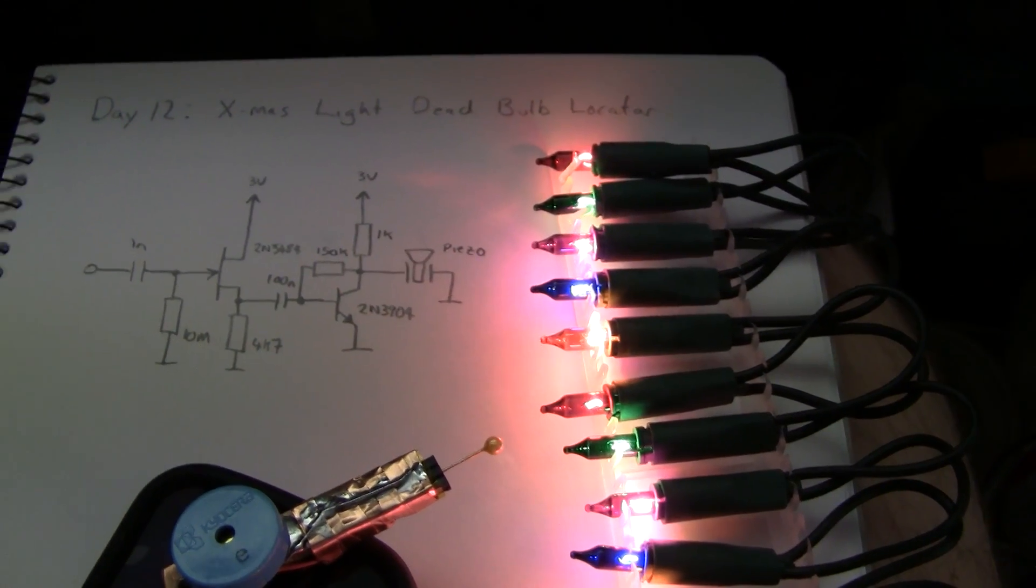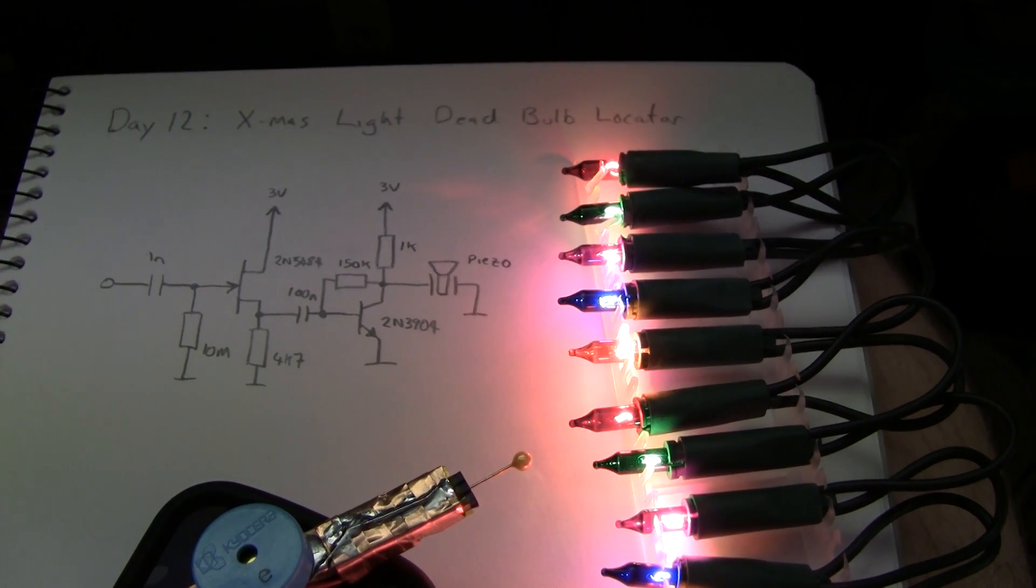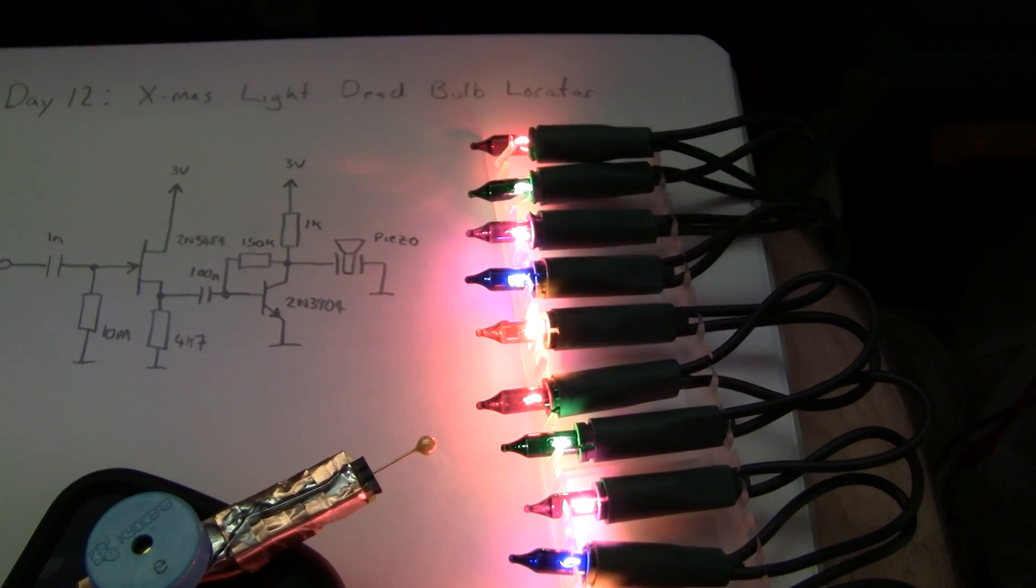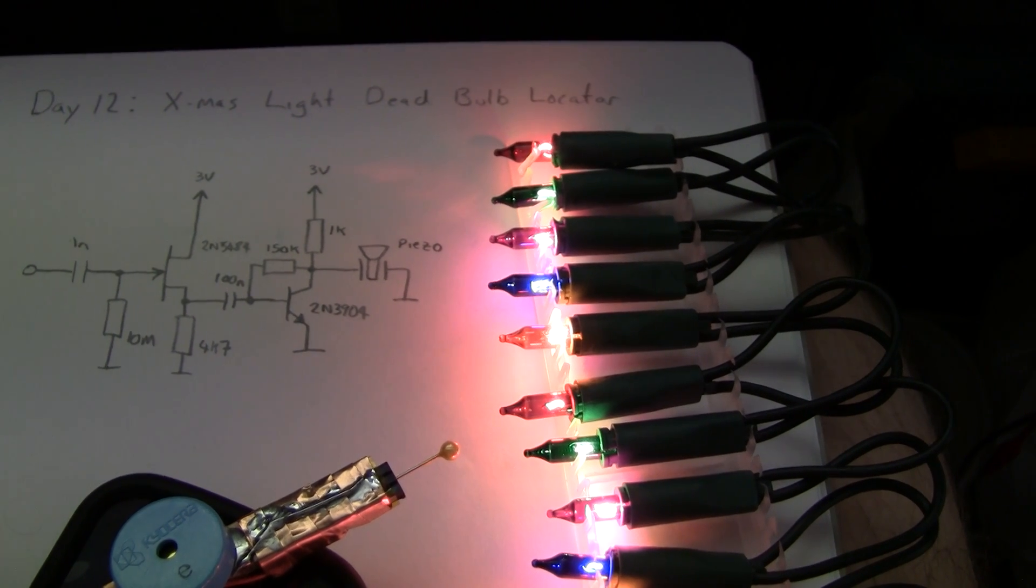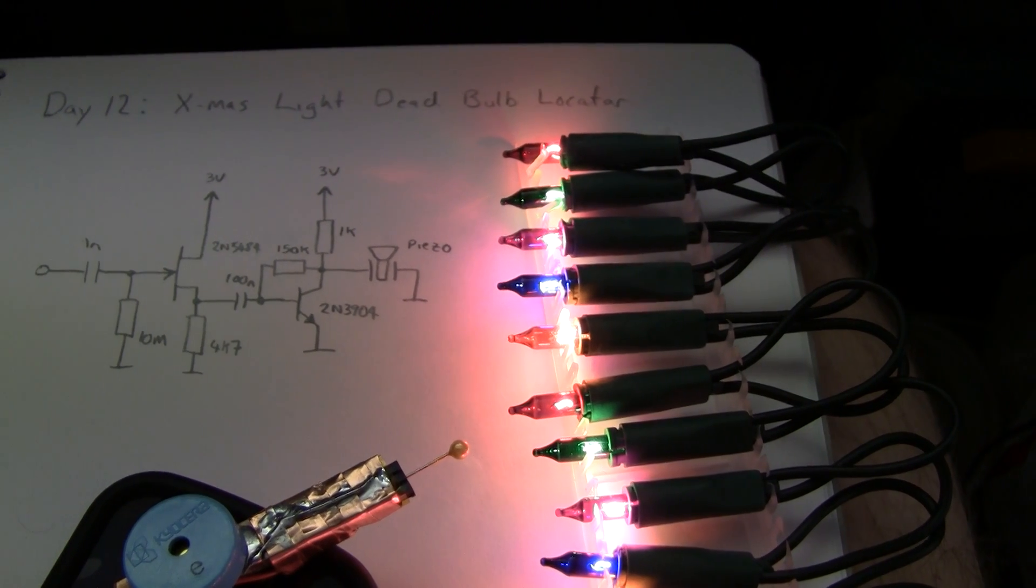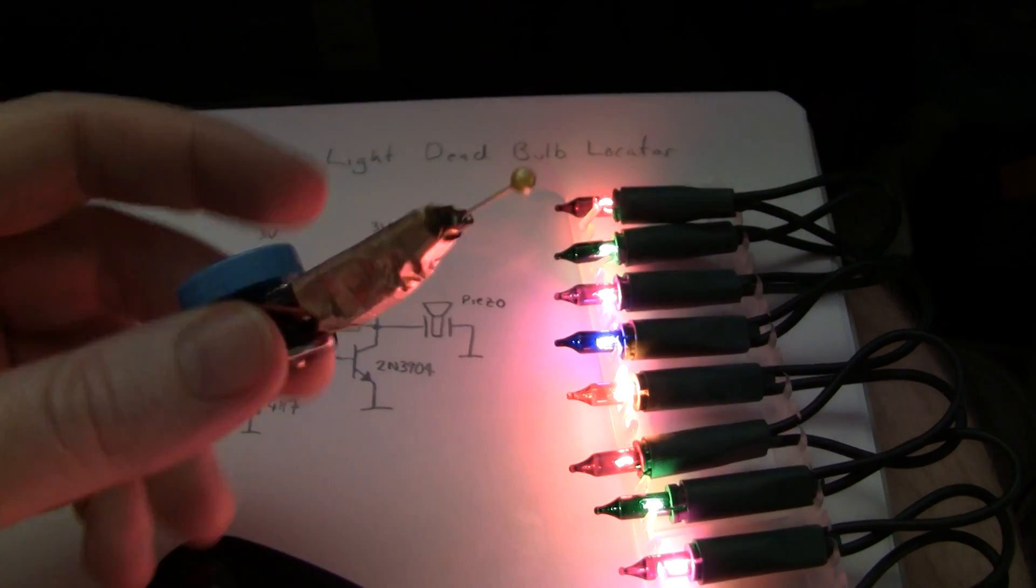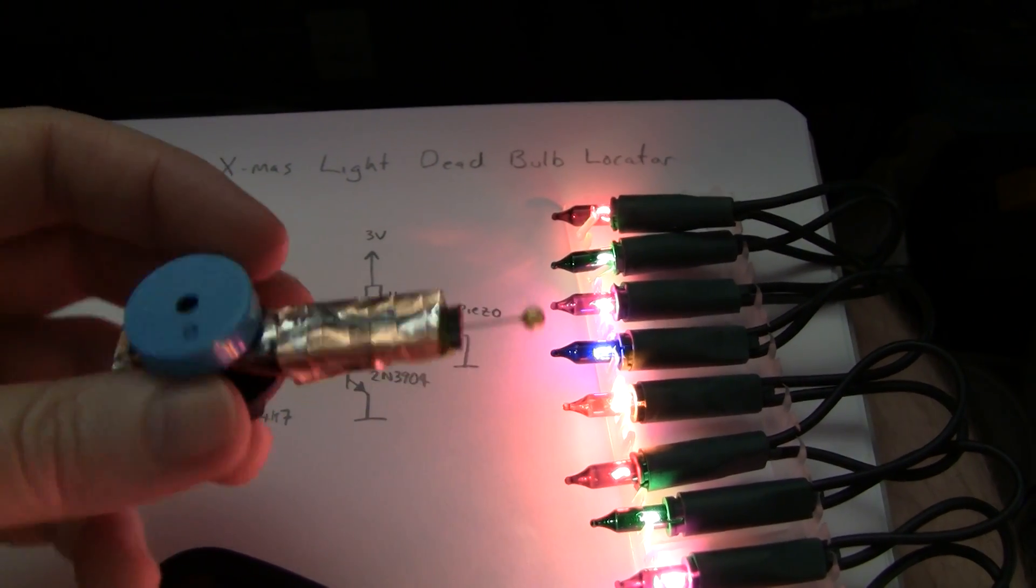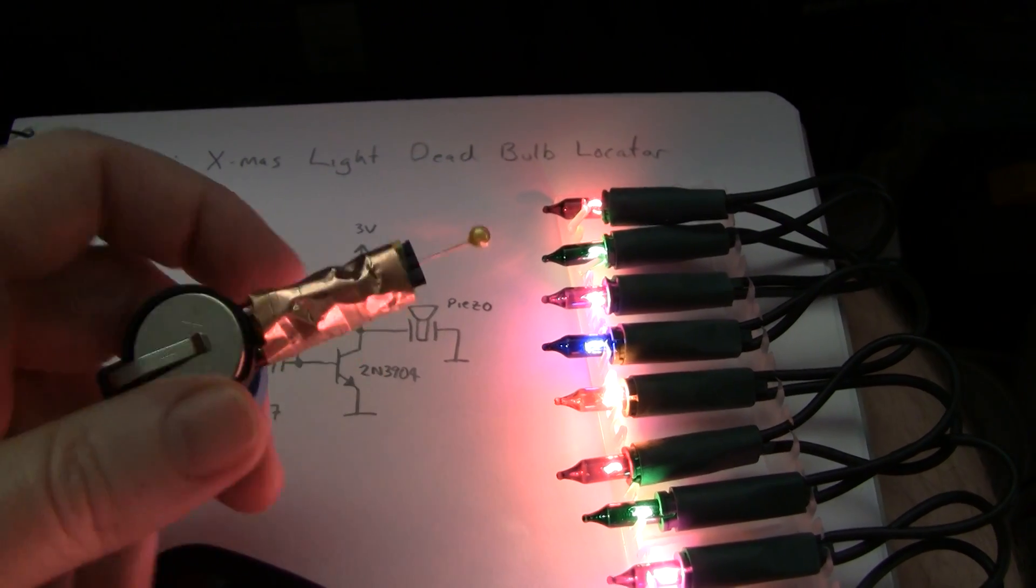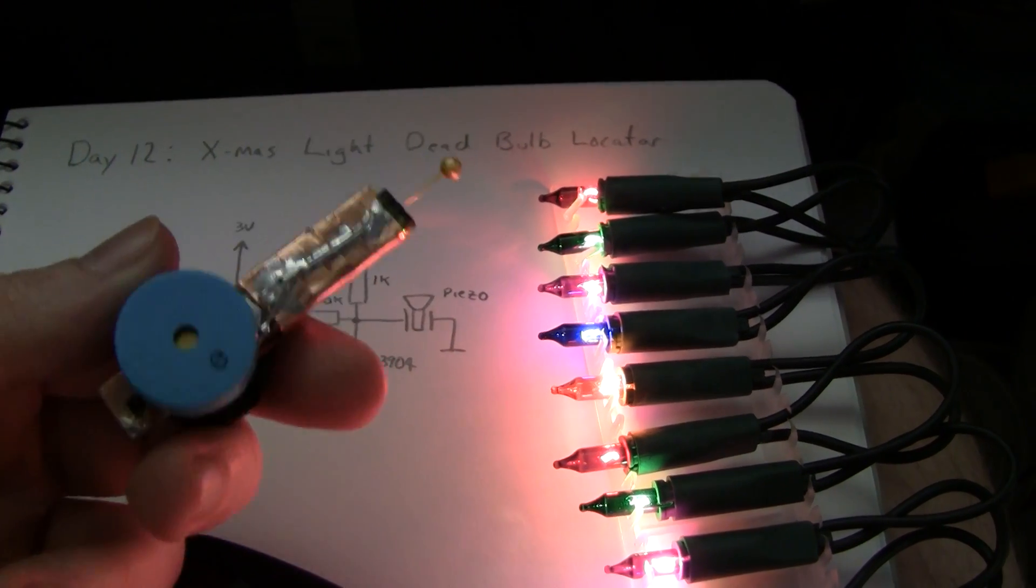You can also use a signal generator to inject a tone into one end if you don't want to use the mains or if your mains is particularly clean and quiet. We might actually do that as a circuit. This is essentially the line tracer or a pair chaser, essentially the same circuit.